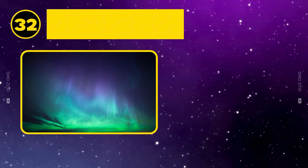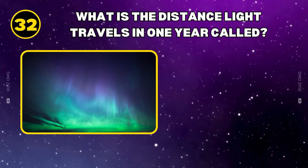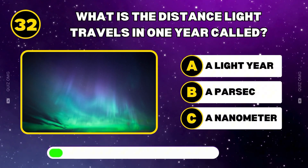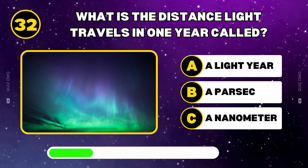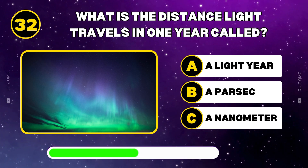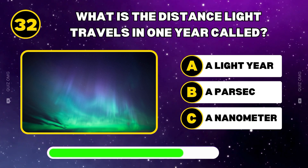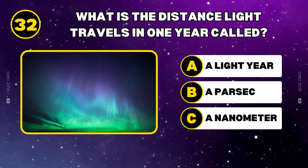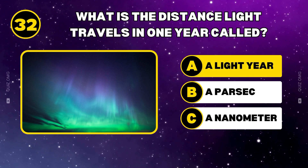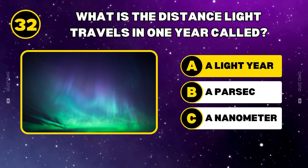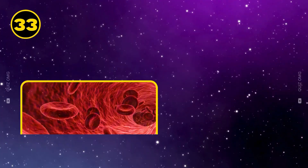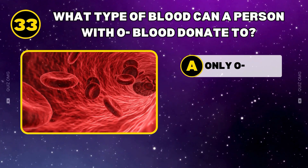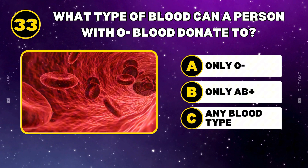What is the distance light travels in one year called? What type of blood can a person with O-blood donate to?